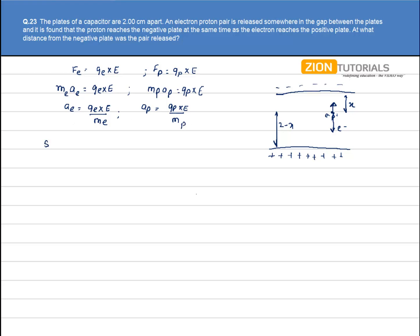Now we use the kinematic formula: s = ut + ½at². Applying this equation for the electron, the distance traveled by the electron is 2-x, the initial velocity is 0, so it becomes: 2-x = ½ × acceleration of electron × t². Similarly, for the proton: x = ½ × acceleration of proton × t².